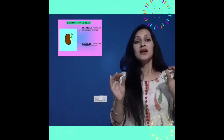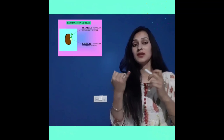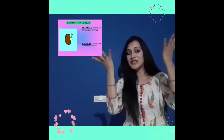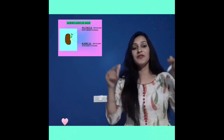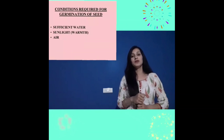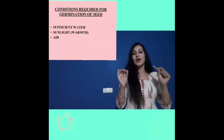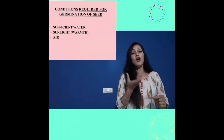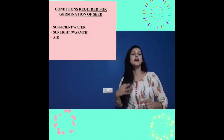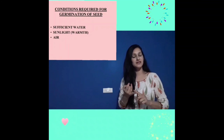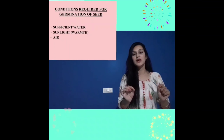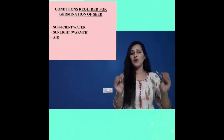Now let us talk about the germination of a seed. The plumule develops into the shoot system, and the radicle develops into the root system. Sufficient water, oxygen, and suitable temperature are necessary for germination.